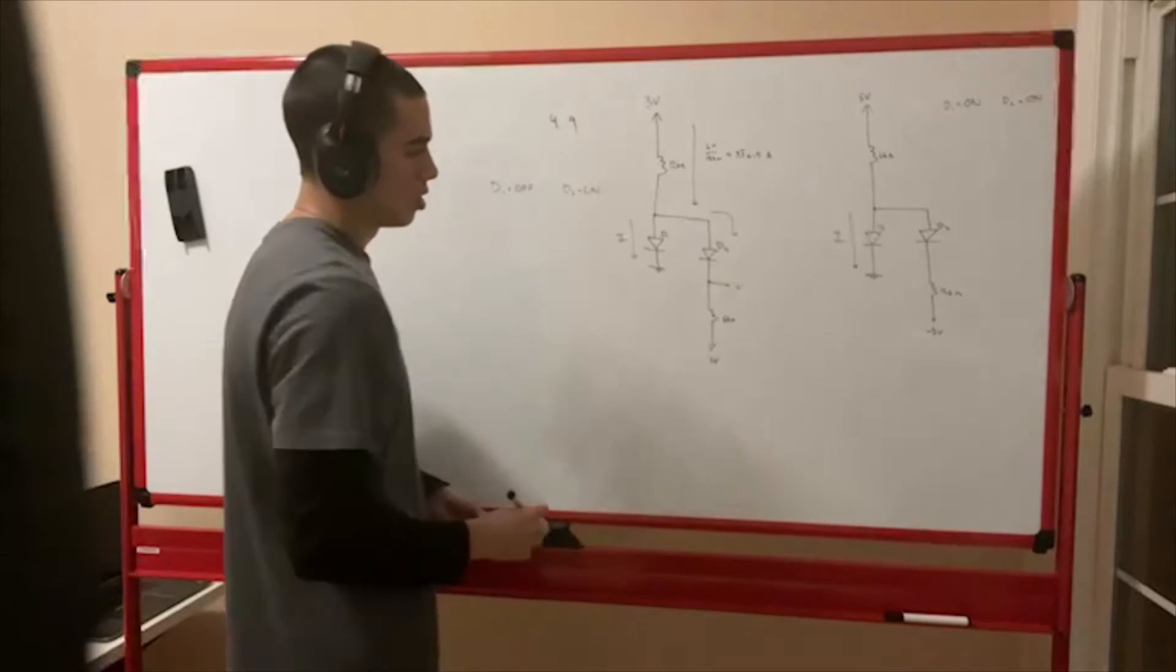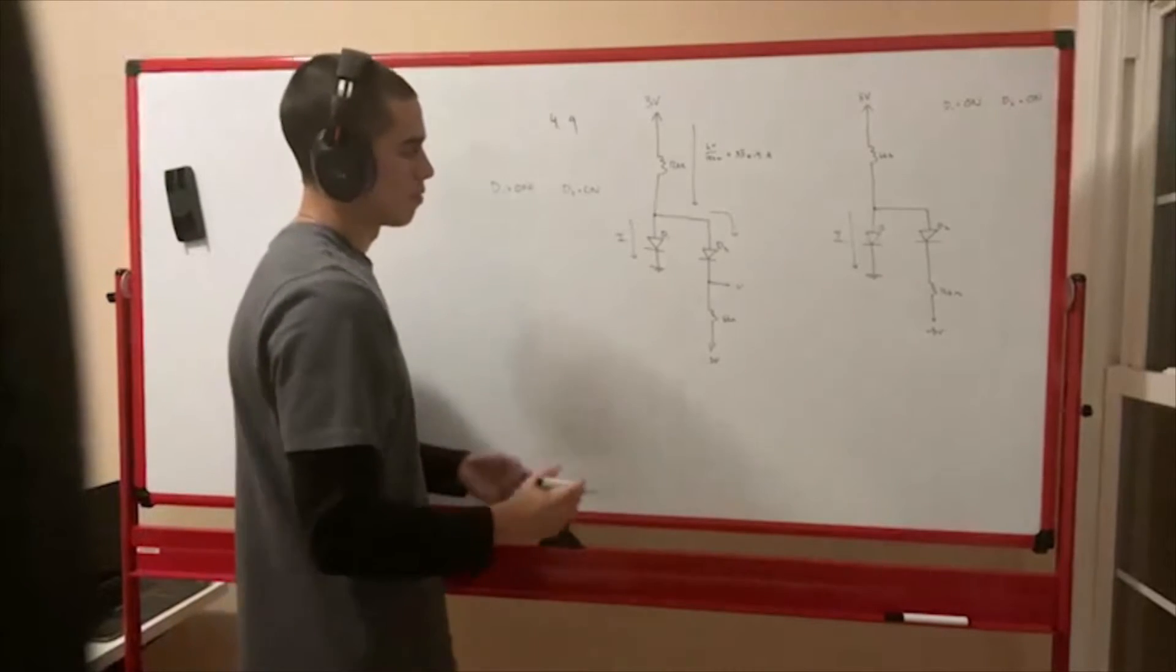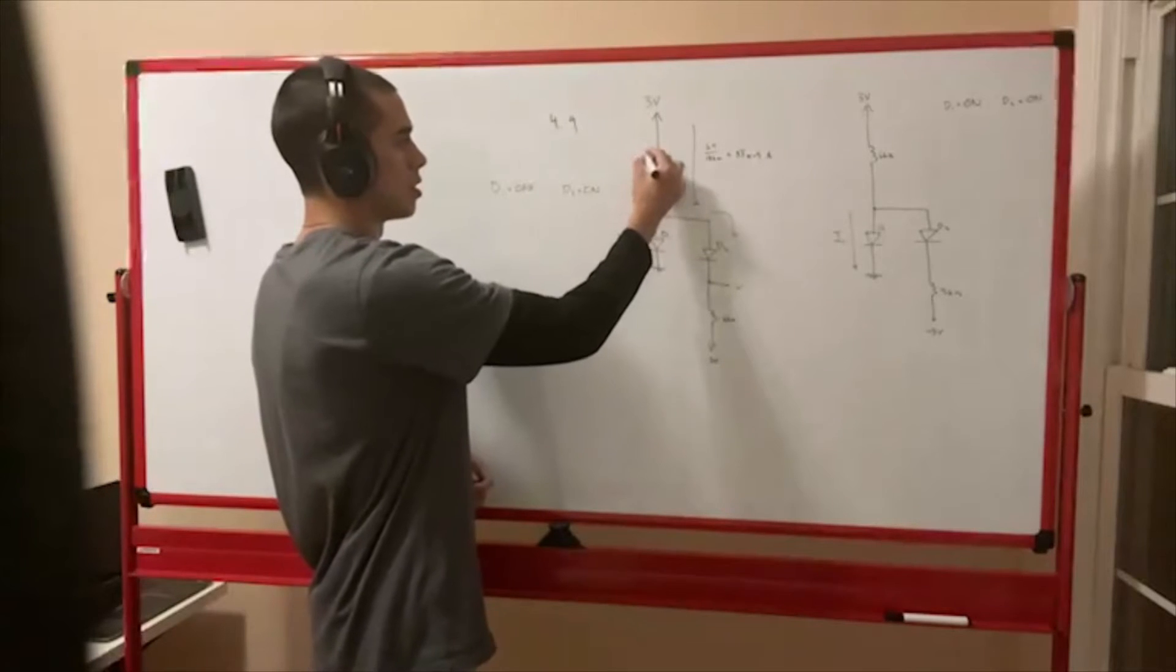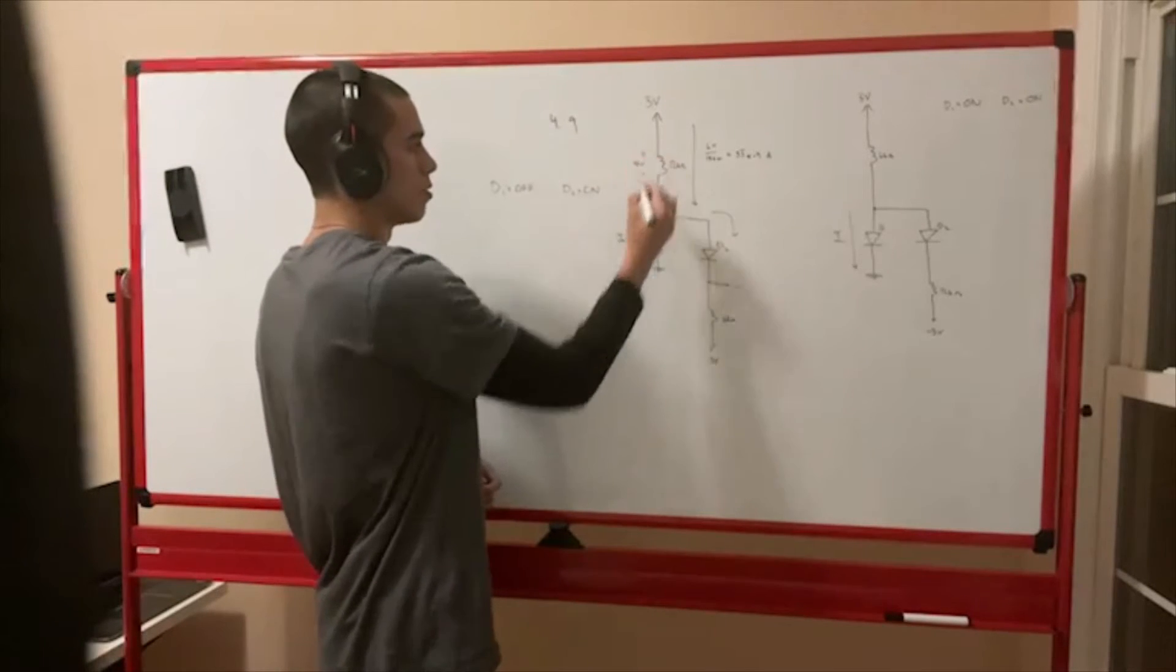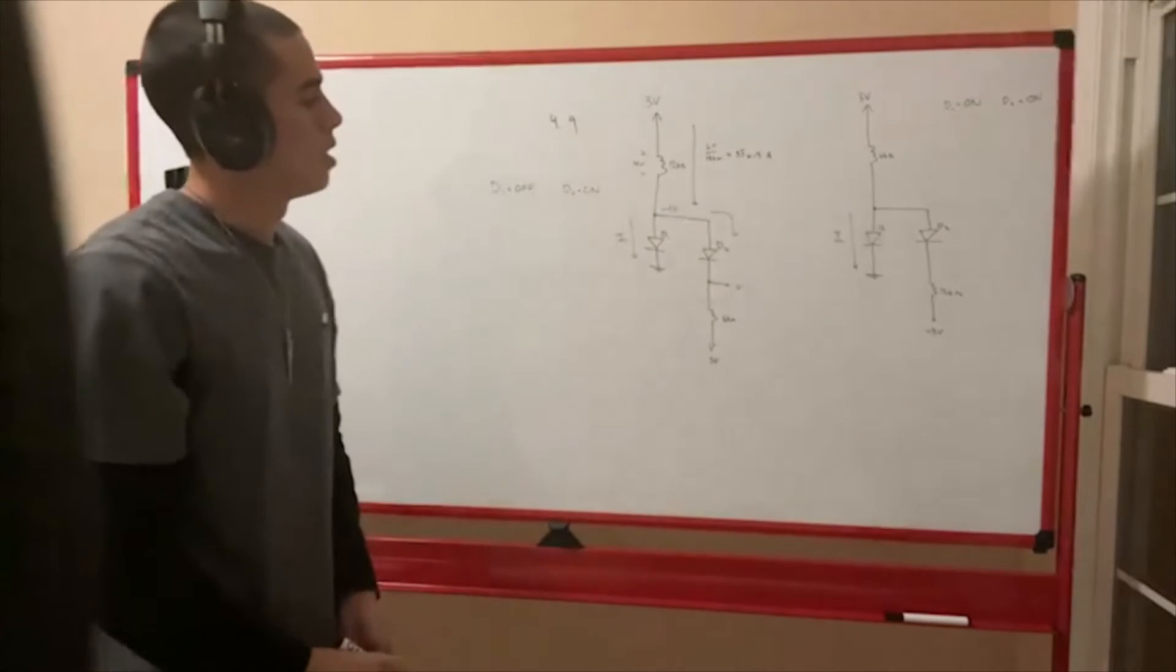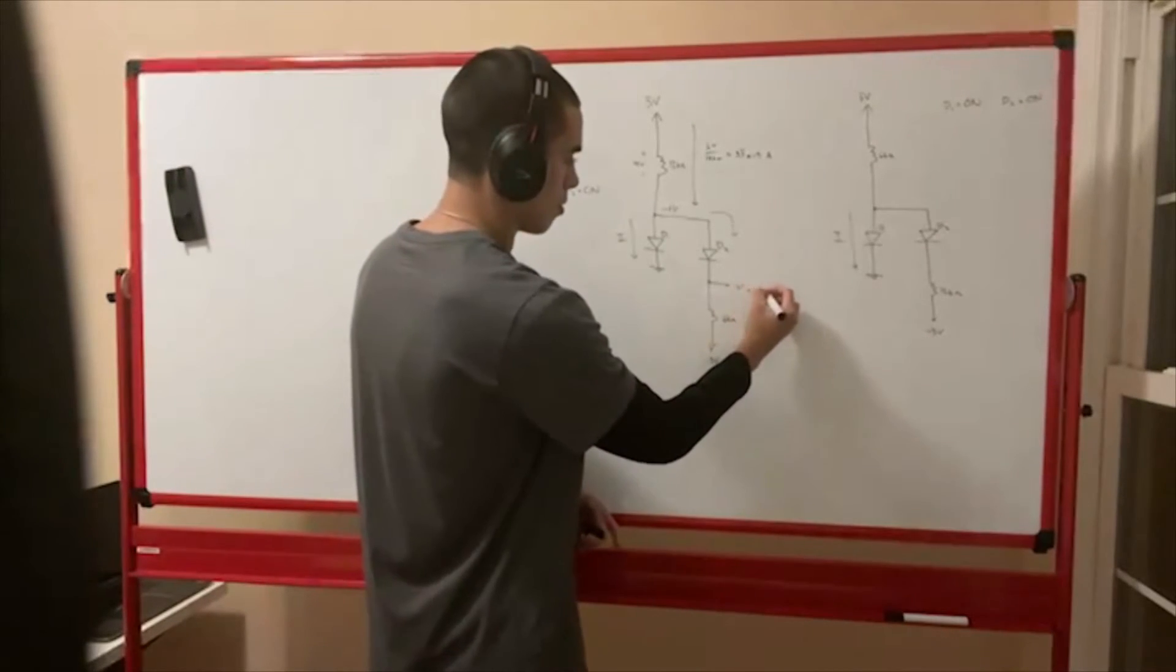So this voltage here, let's find that out. If this is a short, if you have this current going through this resistor, you're going to have a 4 volt voltage drop. So here you're going to have negative 1 volt. And so this is a short, V would be negative 1 volt.